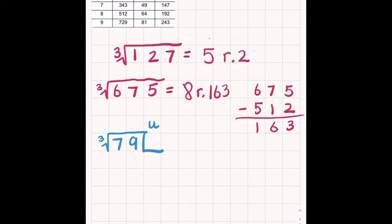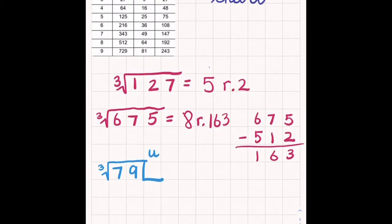So let's look at the chart. We can say that the cube root of 79 is 4, because the closest cube is 4, which is 64. And I'm going to write that off to the side so that I know where I got that 64 from. Then I'm going to subtract, and I get a remainder of 15. So the answer to the cube root of 79 is 4, remainder 15.